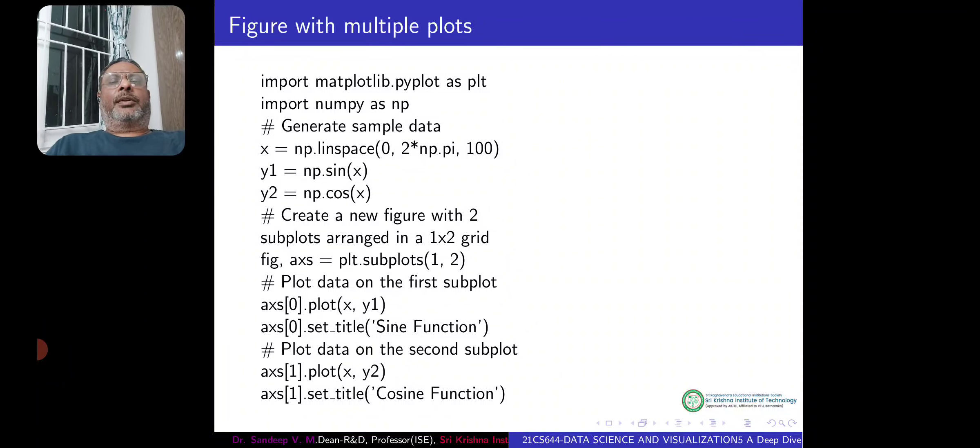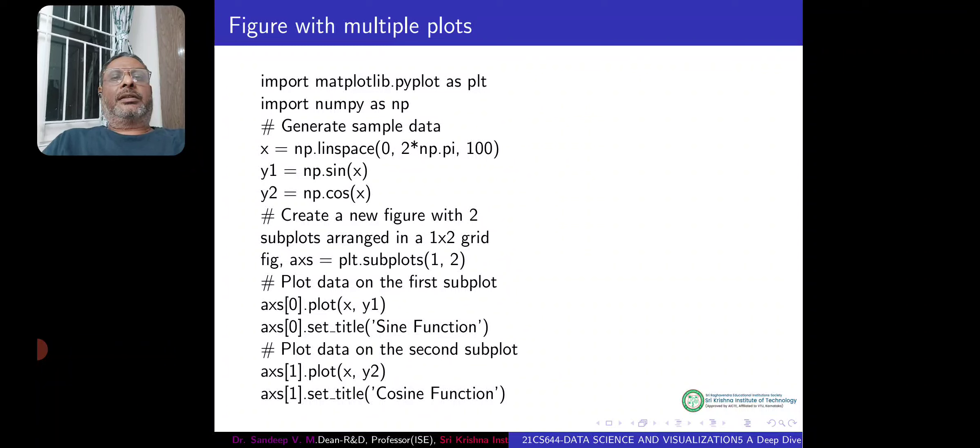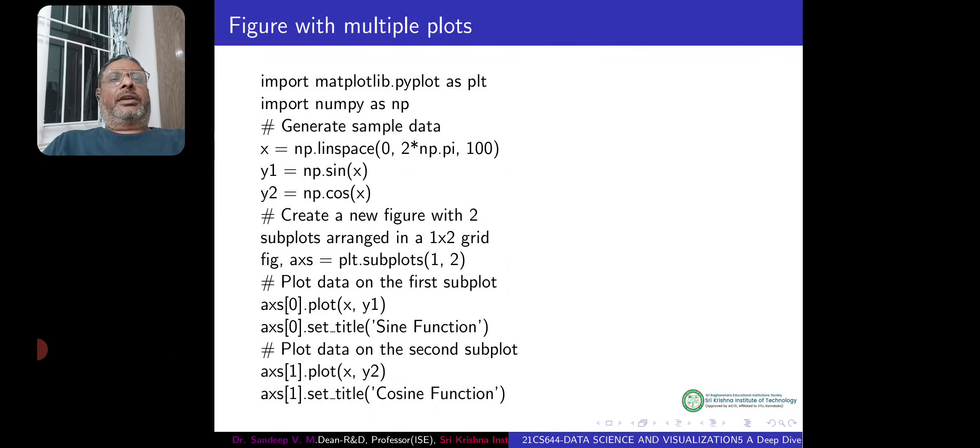So if we want to have multiple plots in the same screen, then let's create two functions. x is common, 0 to 2 pi, there are 100 points. y1 is a sine function, y2 is a cosine function. Now we are creating a figure of 2 by 2. Two plots have to be plotted. Therefore, let's use one row and two columns. So we create figure and axes.